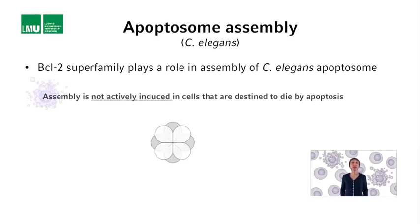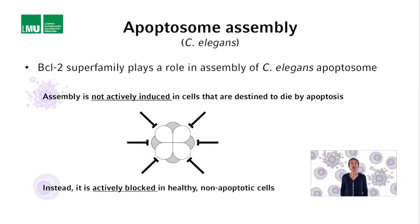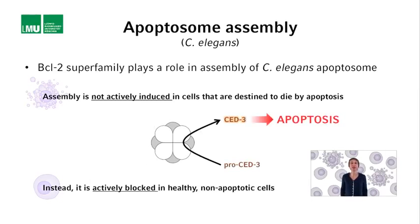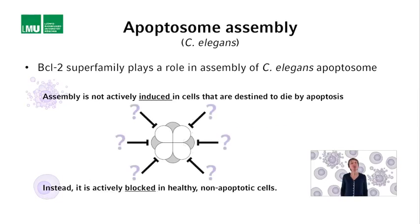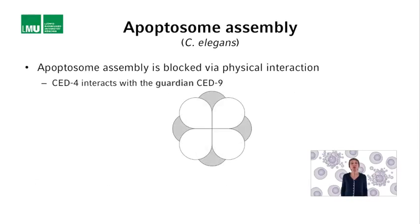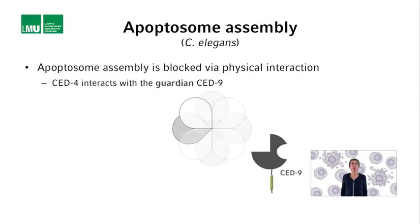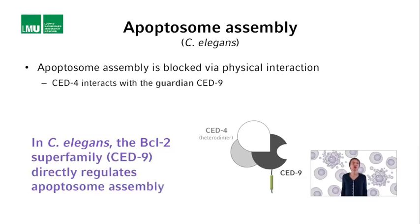It turns out that in C. elegans, the assembly of the apoptosome is not actively induced in cells that are destined to die by apoptosis, but is actively blocked in healthy non-apoptotic cells. In cells that are then destined to die, this block is relieved, allowing apoptosome assembly and PRO-CED-3 activation. Apoptosome assembly is actively blocked through a direct physical interaction between the guardian CED-9 and CED-4. In 1997, a number of investigators independently reported that CED-9 and CED-4 can interact. Therefore, in C. elegans, the BCL-2 superfamily, and CED-9 in particular, directly regulates apoptosome assembly.